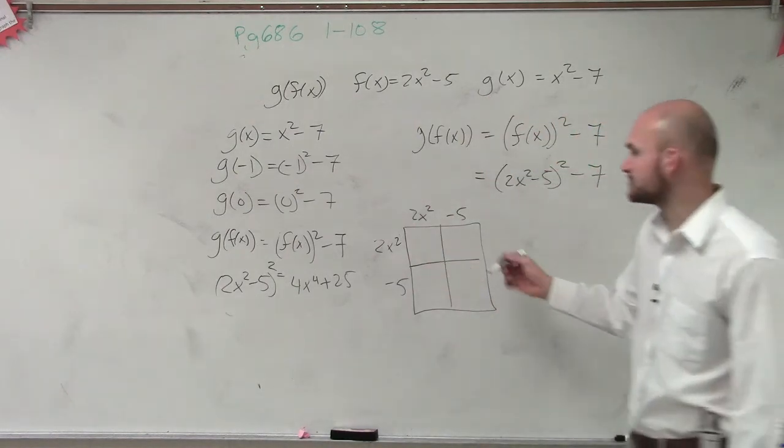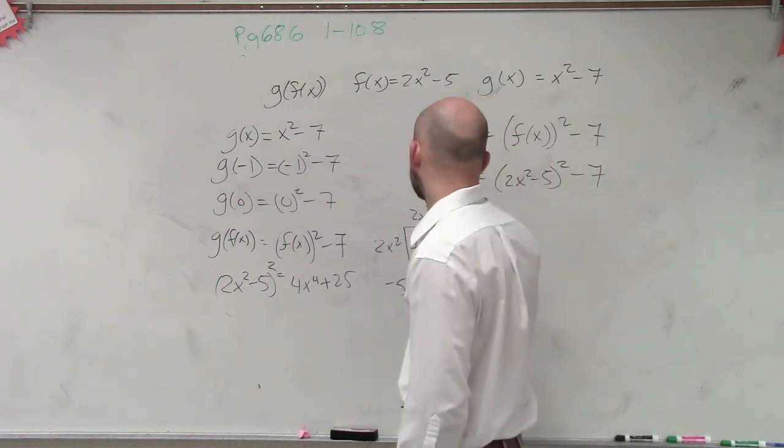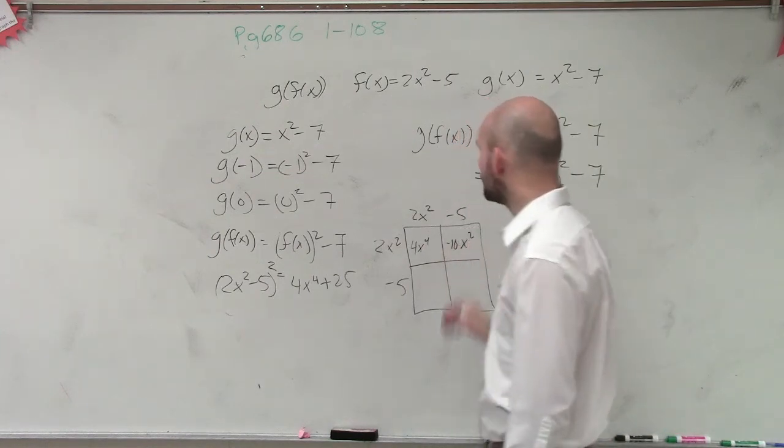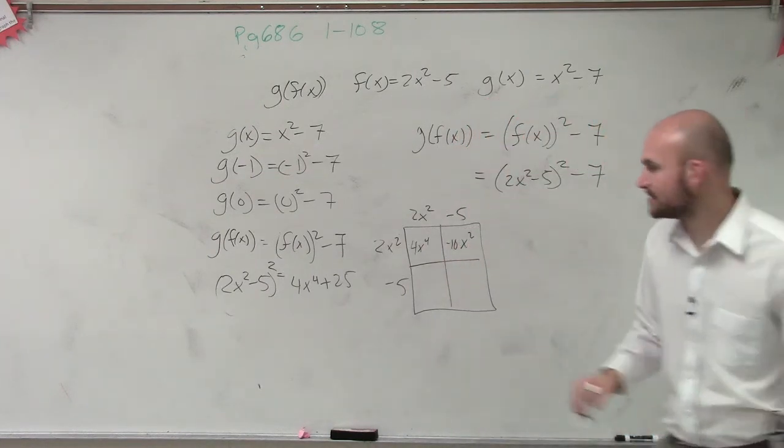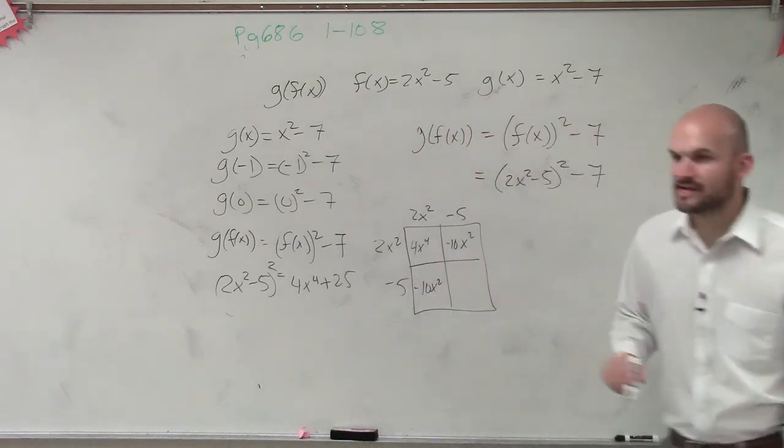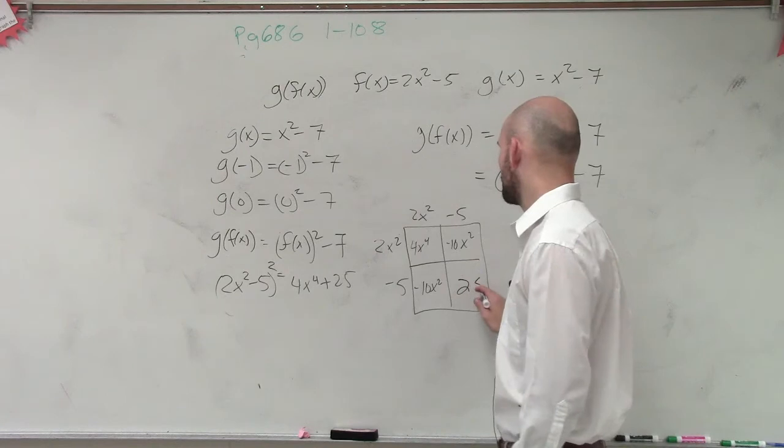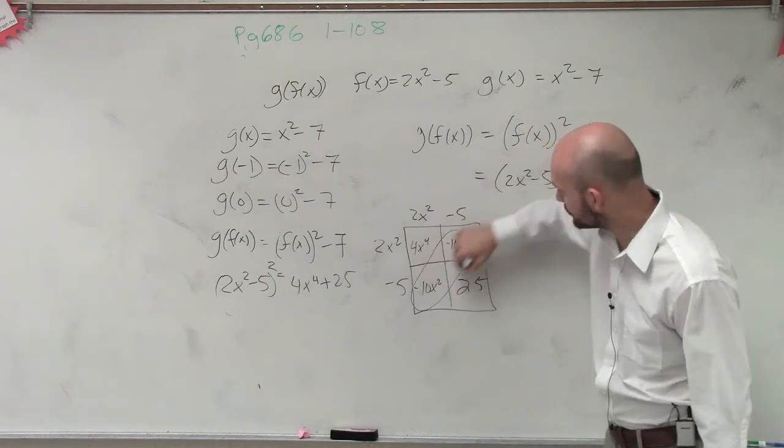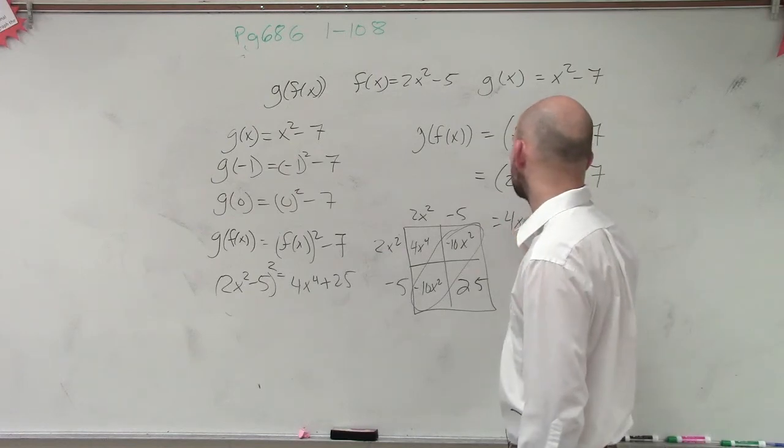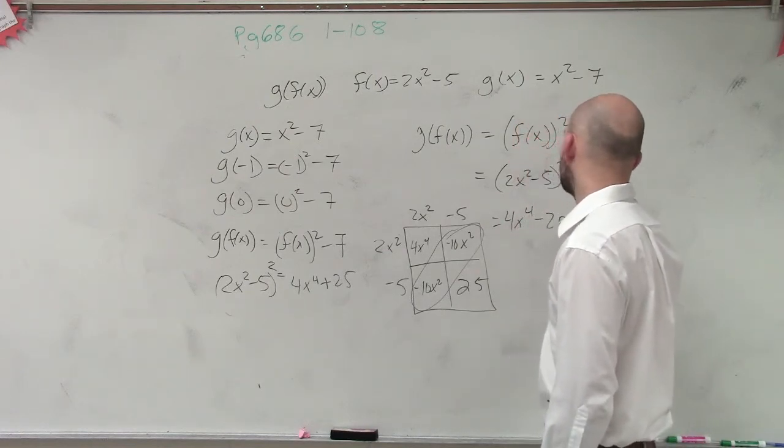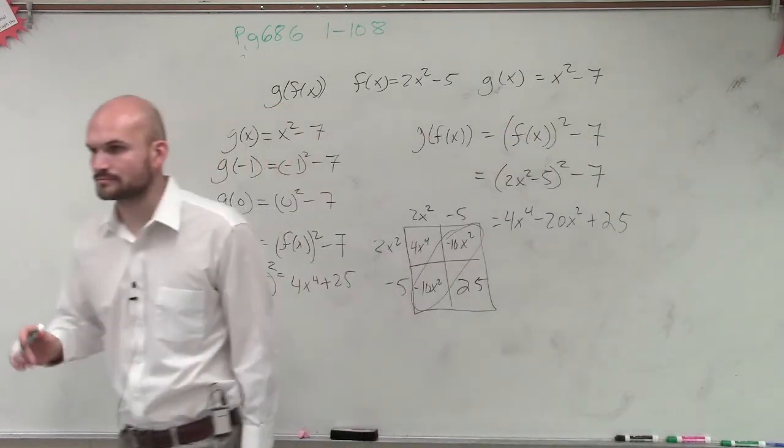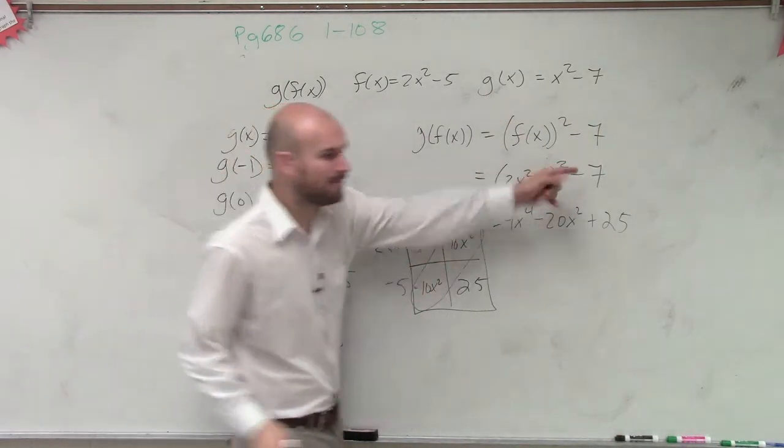2x squared times 2x squared is 4x to the fourth. 2x squared times negative 5 is a negative 10x squared. 2x squared times negative 5 is a negative 10x squared. And negative 5 times negative 5 is 25. Then we notice we have common terms, which would be negative 20. So therefore, I have 4x to the fourth minus 20x squared plus 25. Then, minus 7.